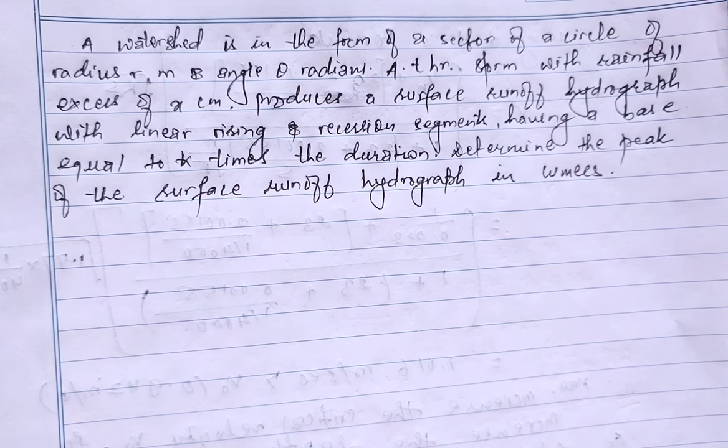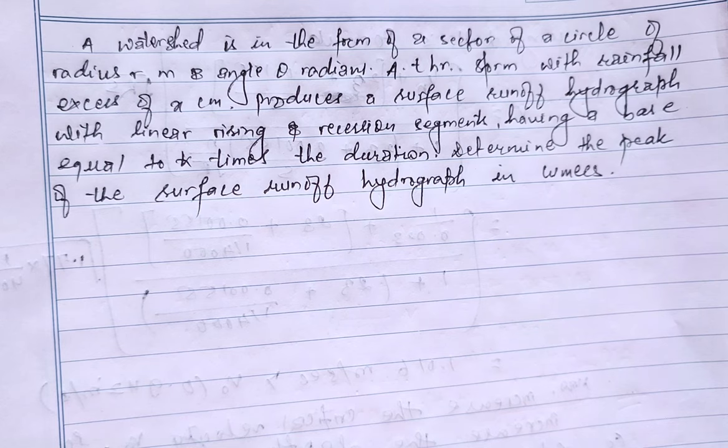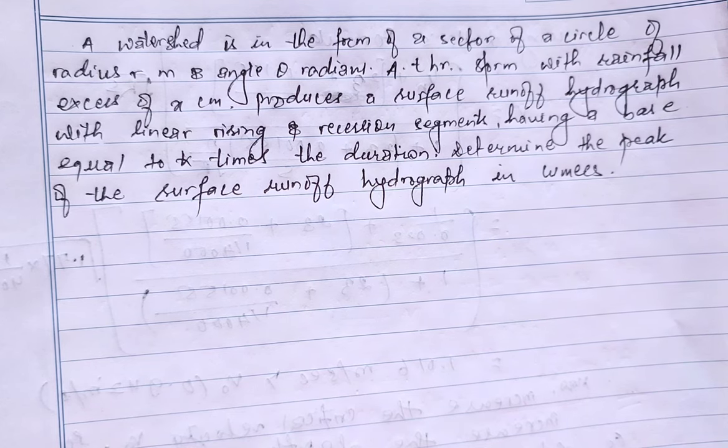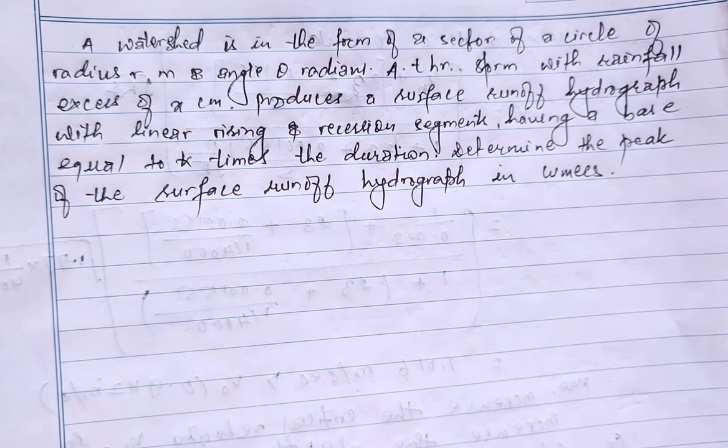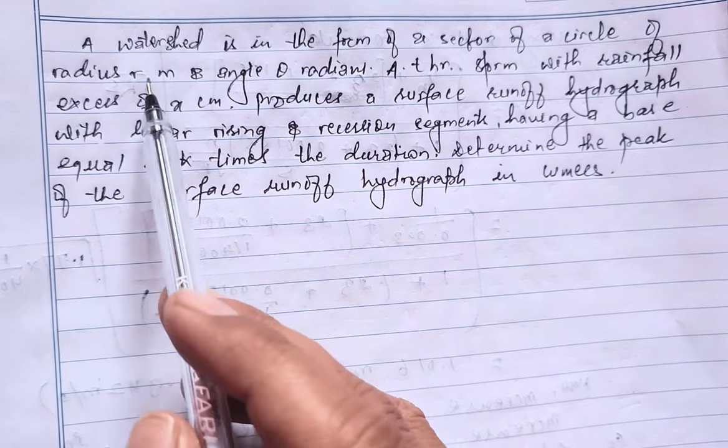Hello everyone, welcome to our channel. Today in this lecture we are going to solve a numerical related to watershed. The given question is: a watershed is in the form of a sector of a circle of radius r meter and angle theta radians.